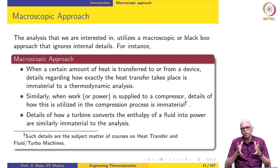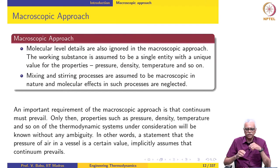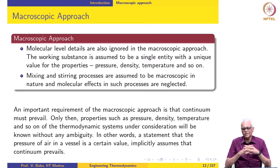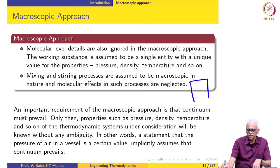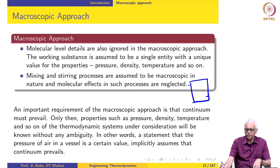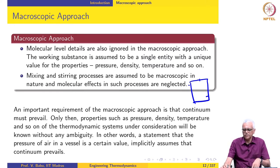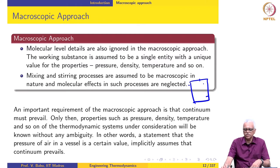That is one important thing we should understand when we say we follow the macroscopic approach. The second important aspect is that molecular-level details are also ignored. We assume the working substance to be a single entity with a unique value for properties such as pressure, density, temperature, and so on. What this means is that if we have a vessel filled with air and measure pressure — or any property — at any location, they must all have the same value. The density measured at any location, the temperature measured at any location, should all be the same.